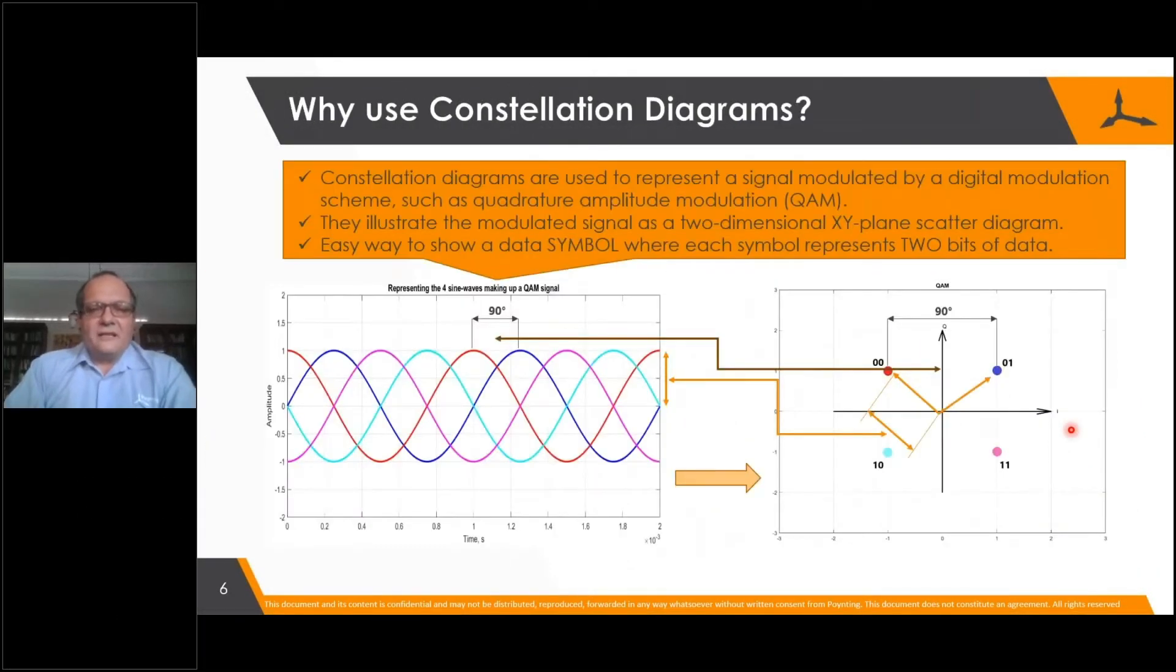Now let's look at modulating data onto such a signal. Clearly, we can't just send a nice sine wave because that's no information. We've got ways to manipulate the sine wave—we can manipulate its frequency, its amplitude, and its phase.